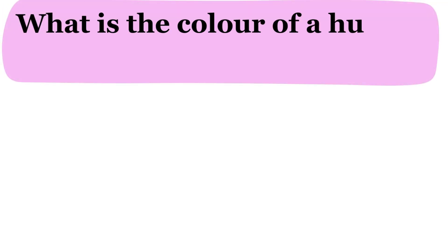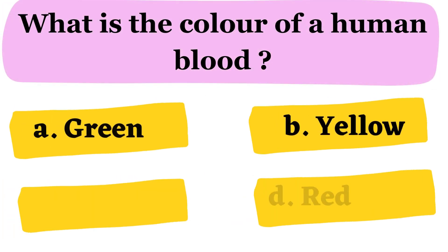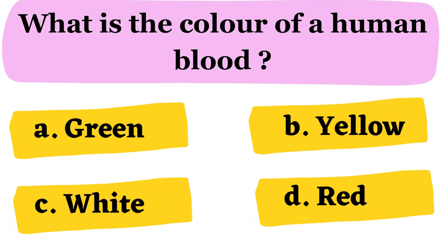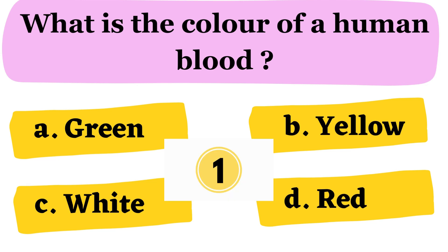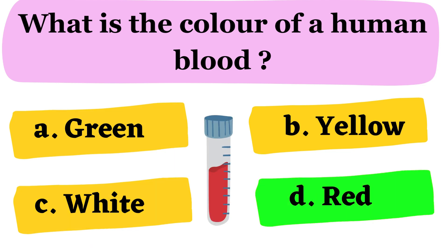Next question. What is the color of human blood? A. Green B. Yellow C. White D. Red. The correct answer is option D.